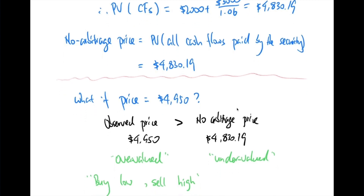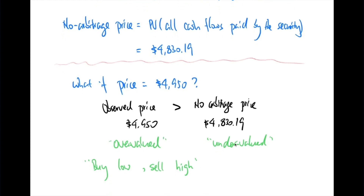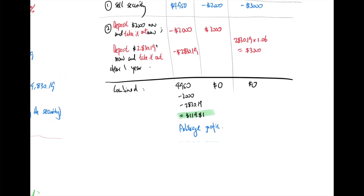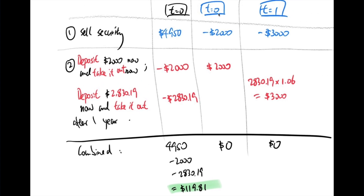The idea is that you always buy low and sell high. Since the security is overpriced at $4,950, you sell it. By selling the security, you receive $4,950 now. However, selling the security means you must pay the owner $2,000 today and $3,000 in one year — that's what the security's payoff is. To construct the arbitrage, at the same time you deposit $2,000 now and take it out now, and also deposit $2,830.19 now and withdraw it after one year.